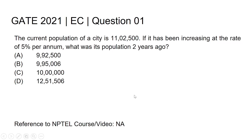Hi all, this is GATE 2021 Electronics and Communication Engineering, question number one. The question is: the current population of a city is 1,10,25,000. If it has been increasing at the rate of five percent per annum, what was its population two years ago?